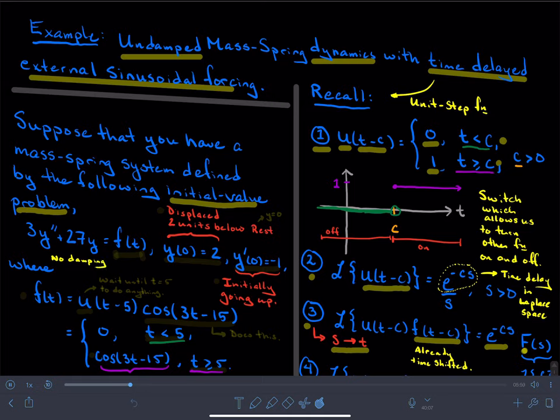Some initial conditions: u at time 0 is 2, which means that initially the mass is displaced 2 units below the rest position.